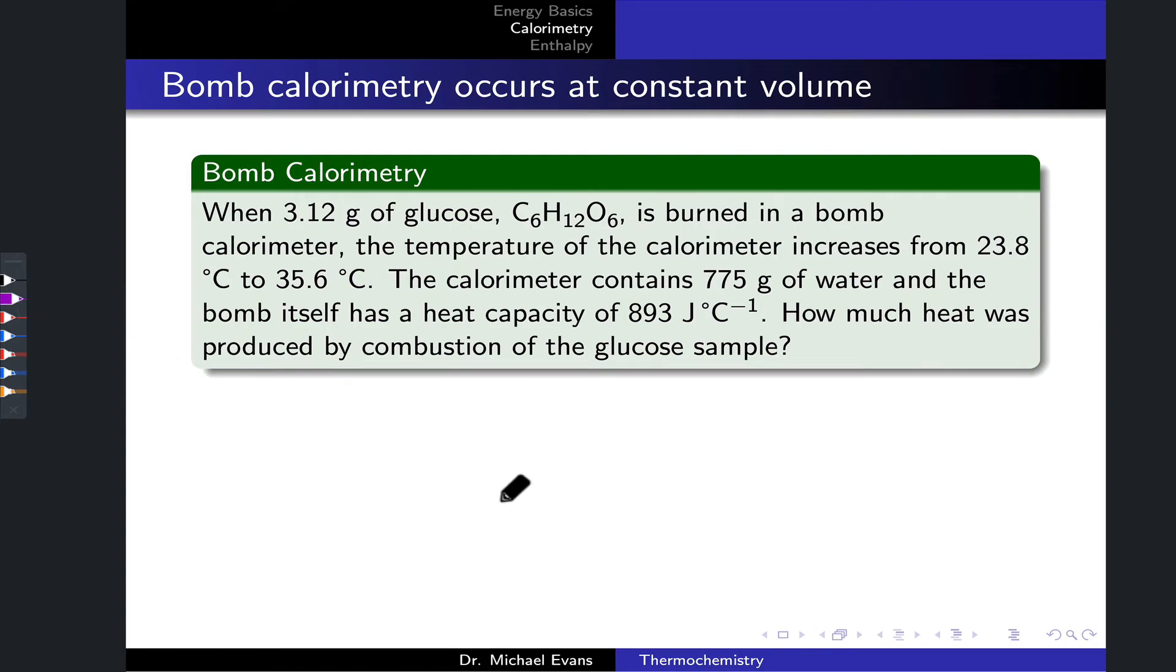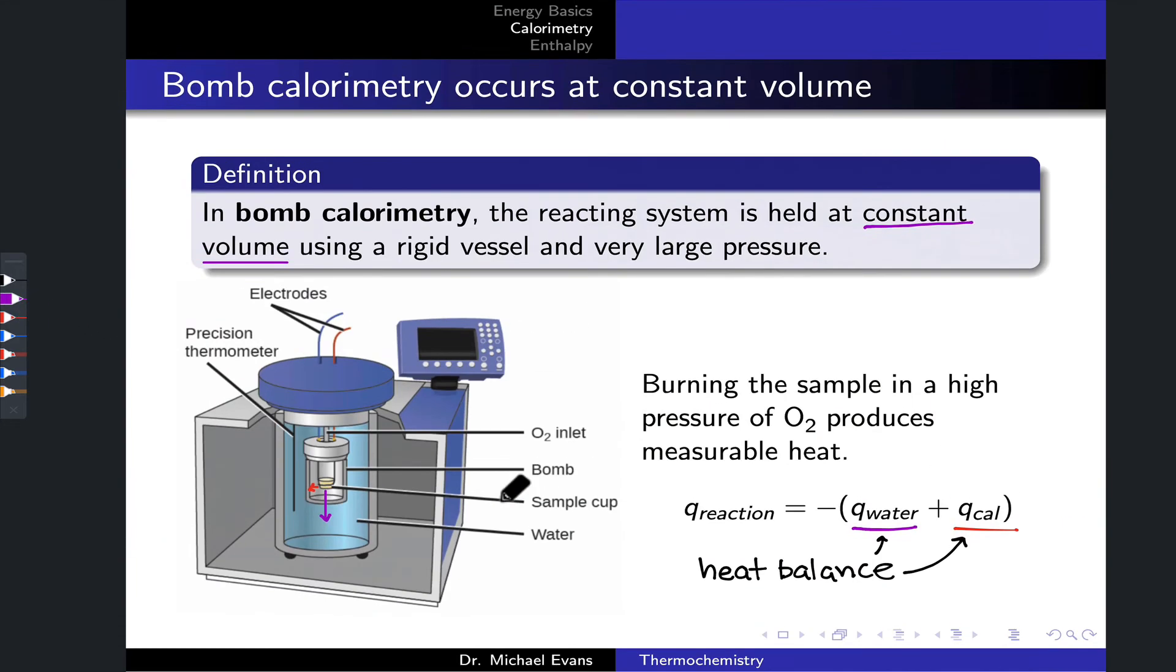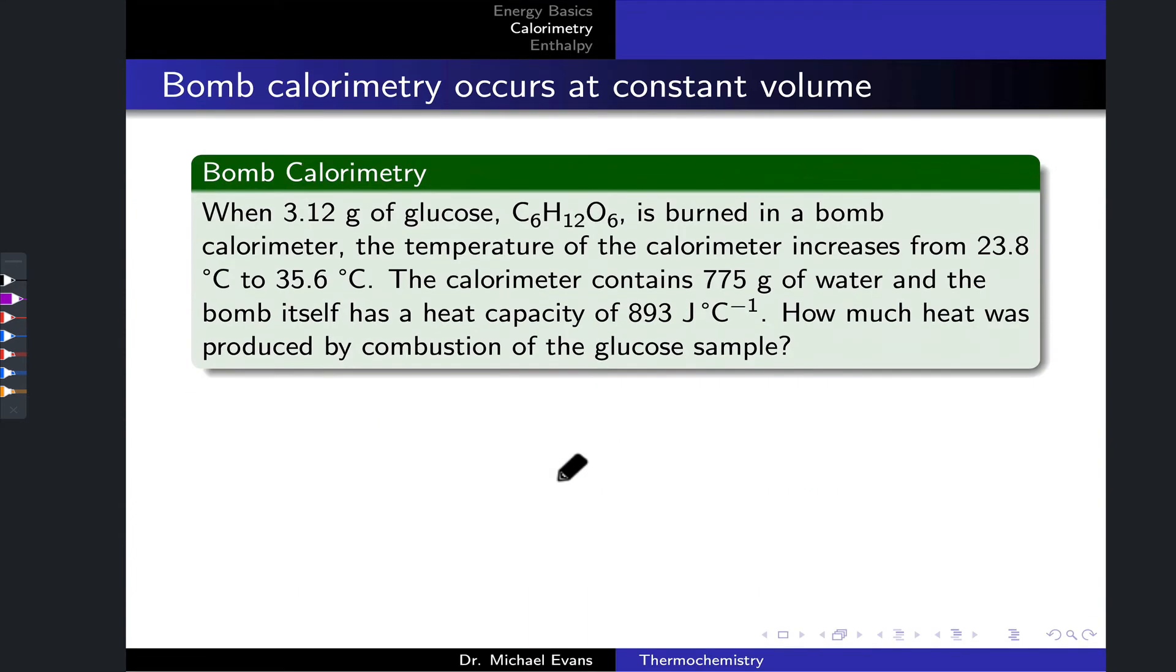Let's imagine that bomb calorimetry apparatus on the previous slide. We put some glucose inside the bomb, 3.12 grams of glucose specifically, and it's burned in a large excess of oxygen at constant volume.